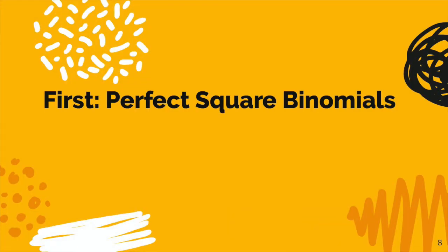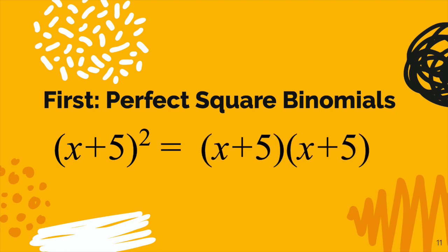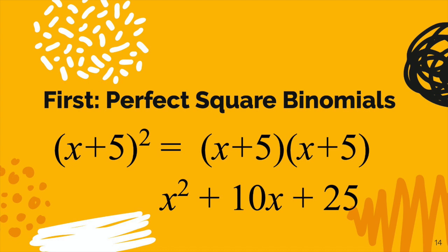First, let's review what it means to have a perfect square binomial. For example, (x + 5) squared would be considered a perfect square. If we foil it out, we would have x plus 5 times itself, which is x squared plus 10x — because 5x and 5x gives two of those — plus 5 times 5 is 25. We have 5 squared, that's how you get the 25.